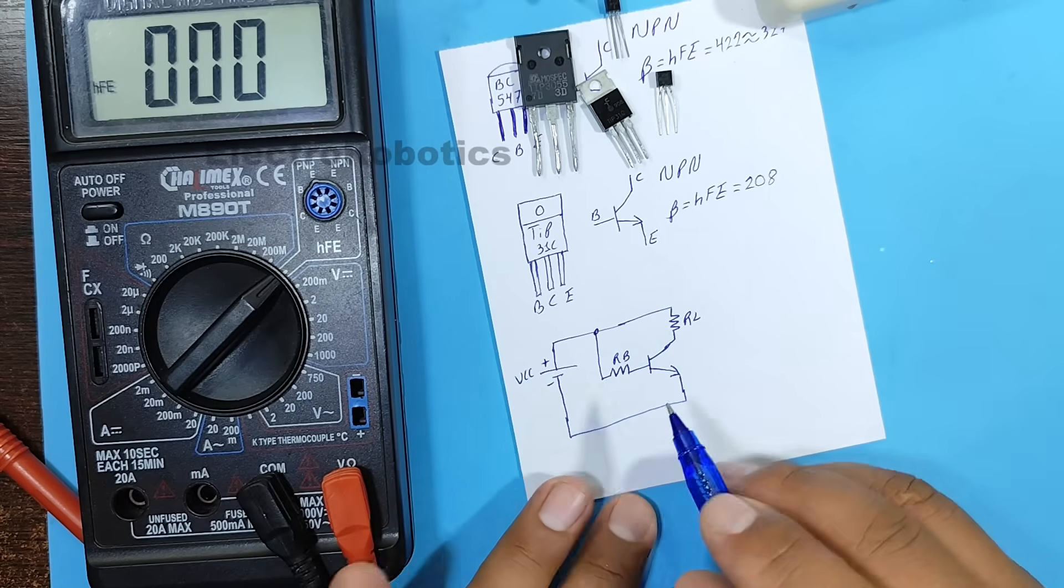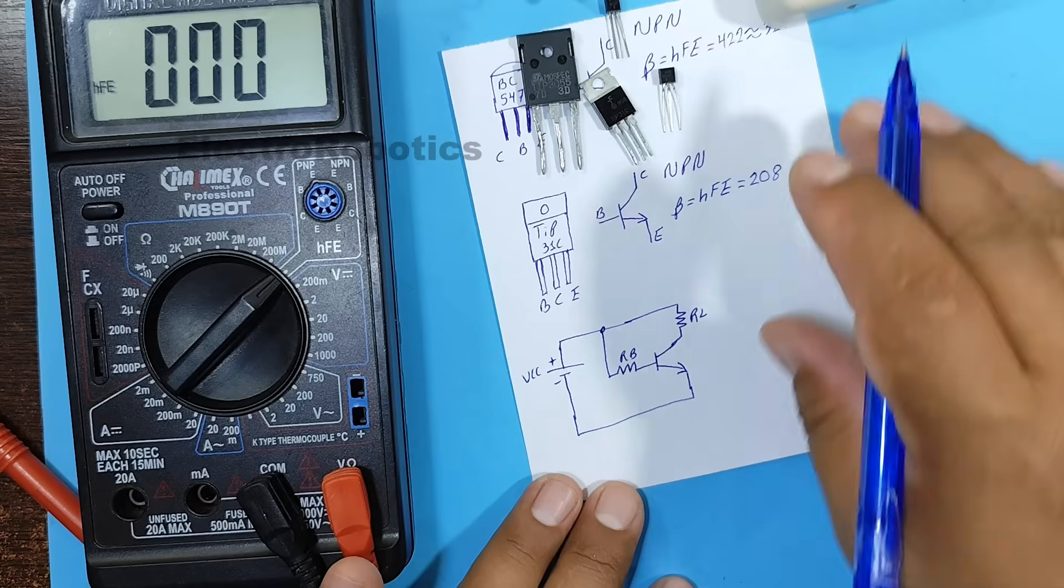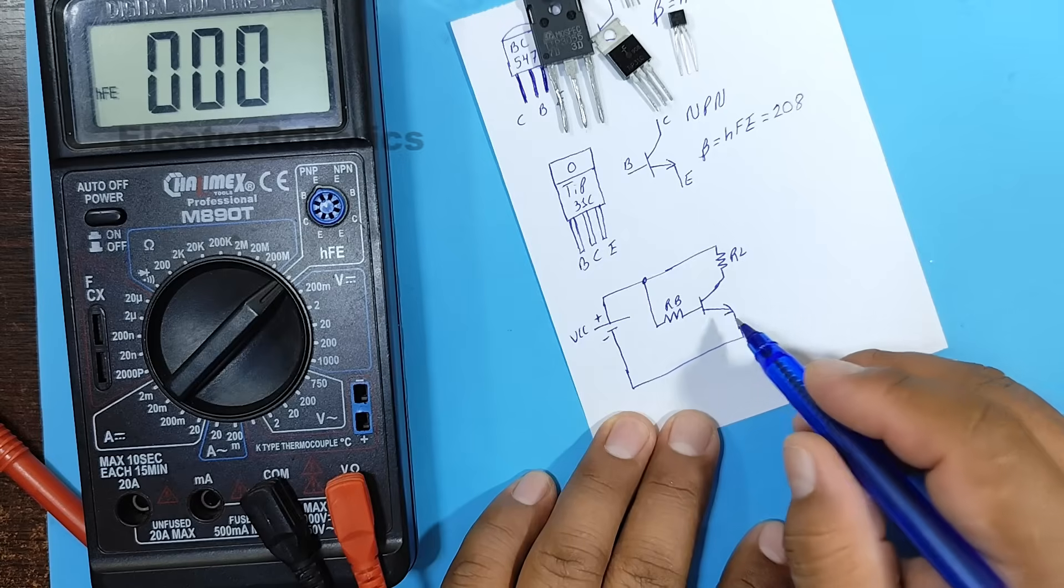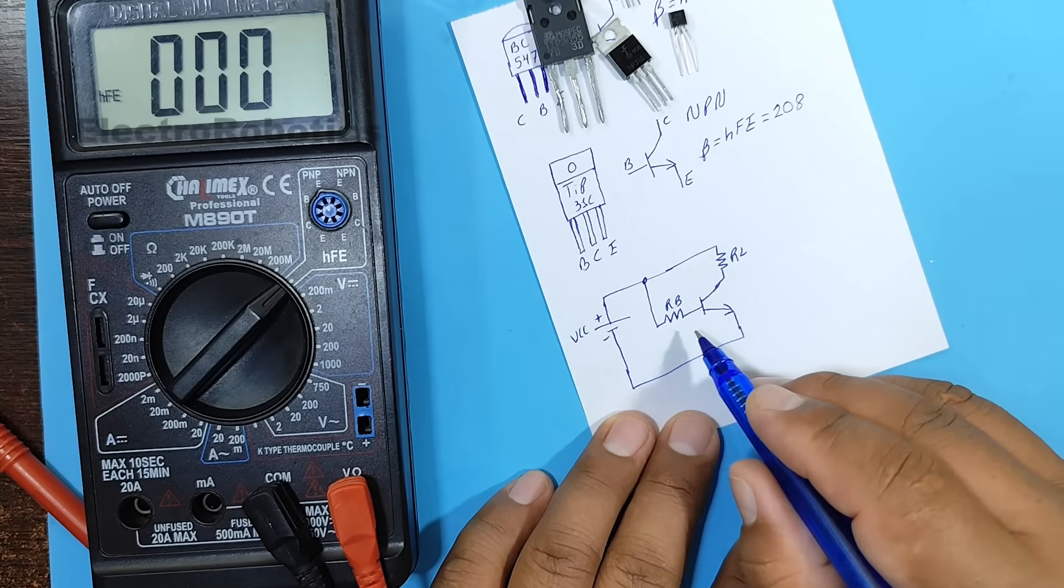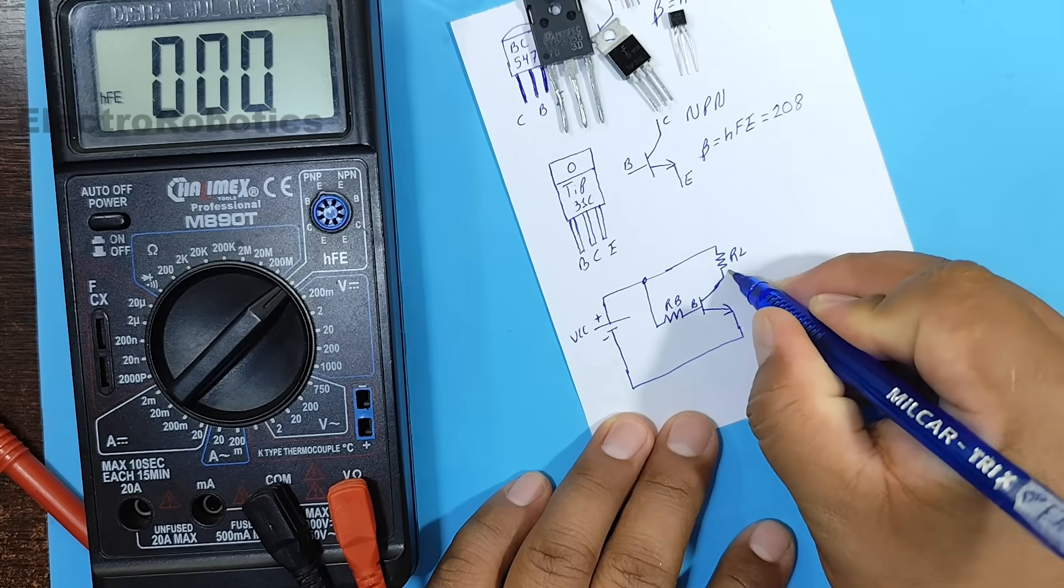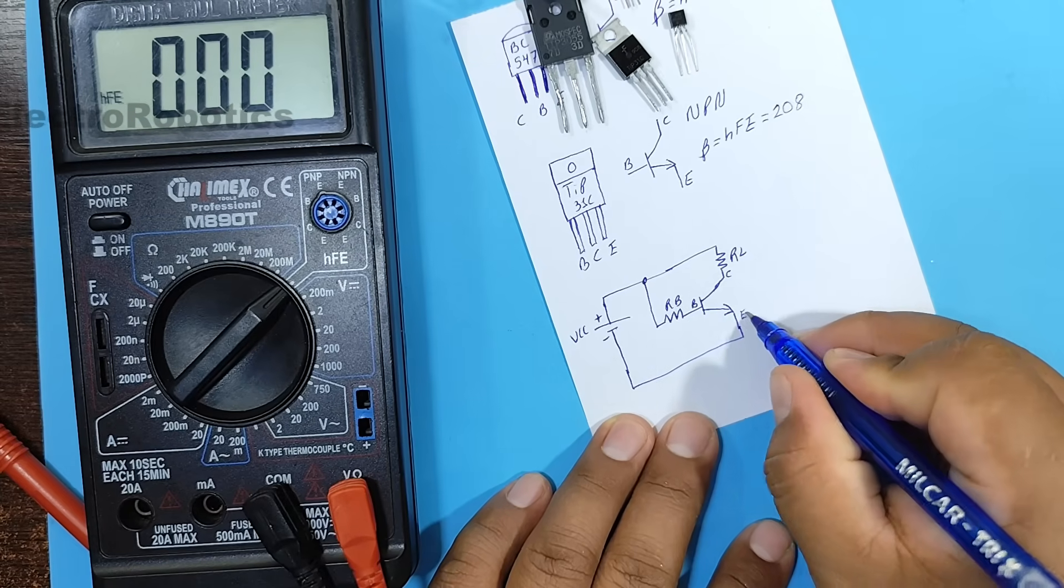Now, what is the gain effect? Well, let's see in this example how the gain would work. Here we have an NPN transistor, in which we have two resistors. One at the base, and another at the collector. And here we have the emitter.